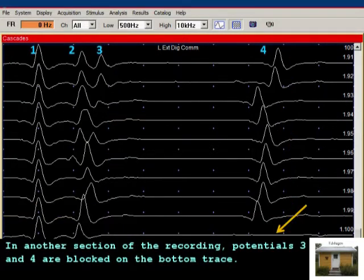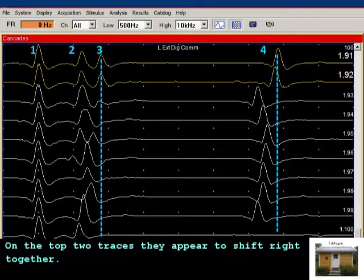In another section of the recording, potentials 3 and 4 are blocked on the bottom trace. On the top two traces, they appear to shift right together.